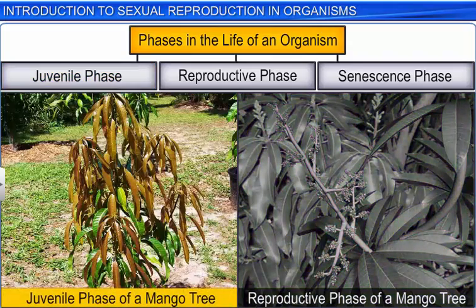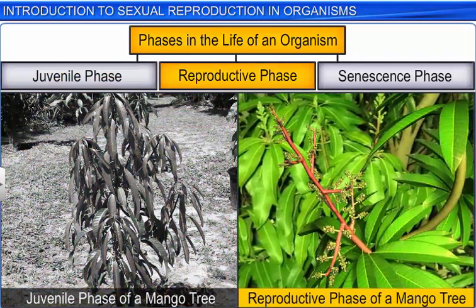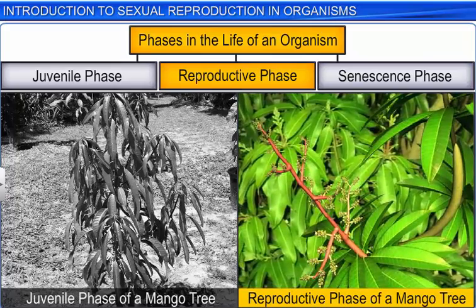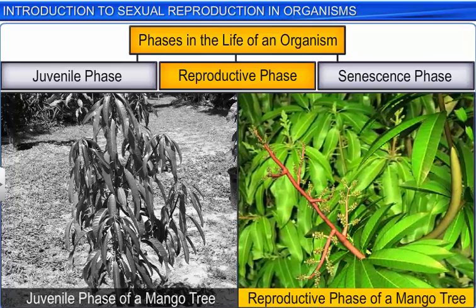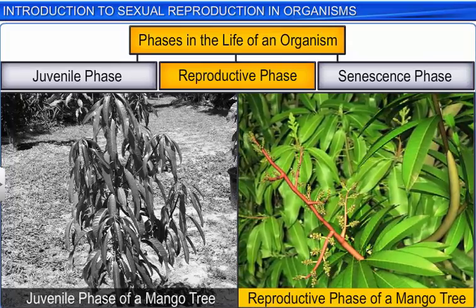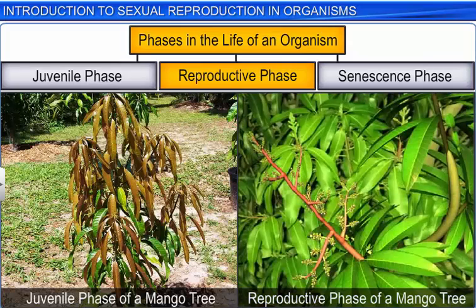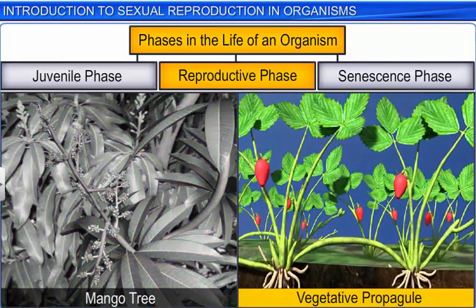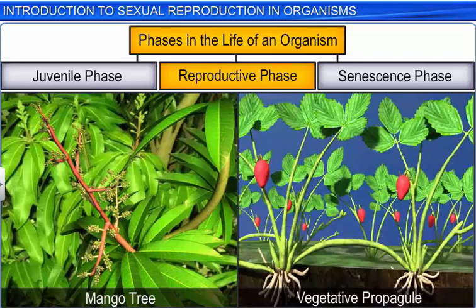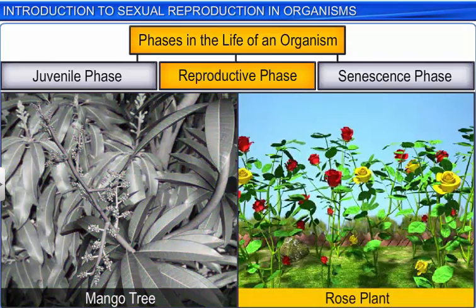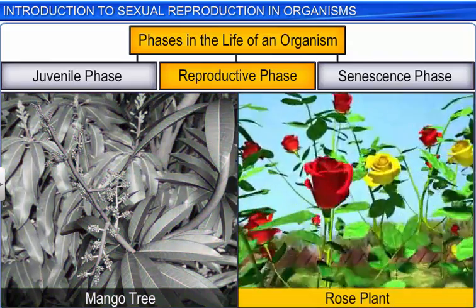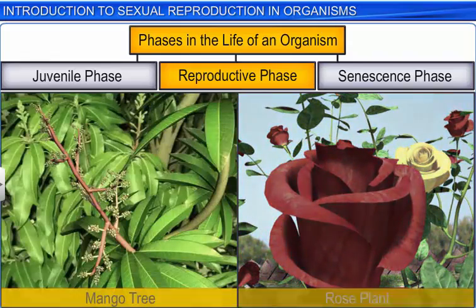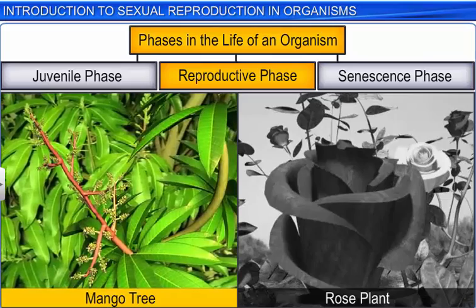The juvenile phase is succeeded by the reproductive phase in both plants and animals. In the case of plants, this phase is marked by the appearance of flowers or vegetative propagules such as runners. However, while some plants such as the rose flower throughout their lifespan, others such as the mango flower seasonally.